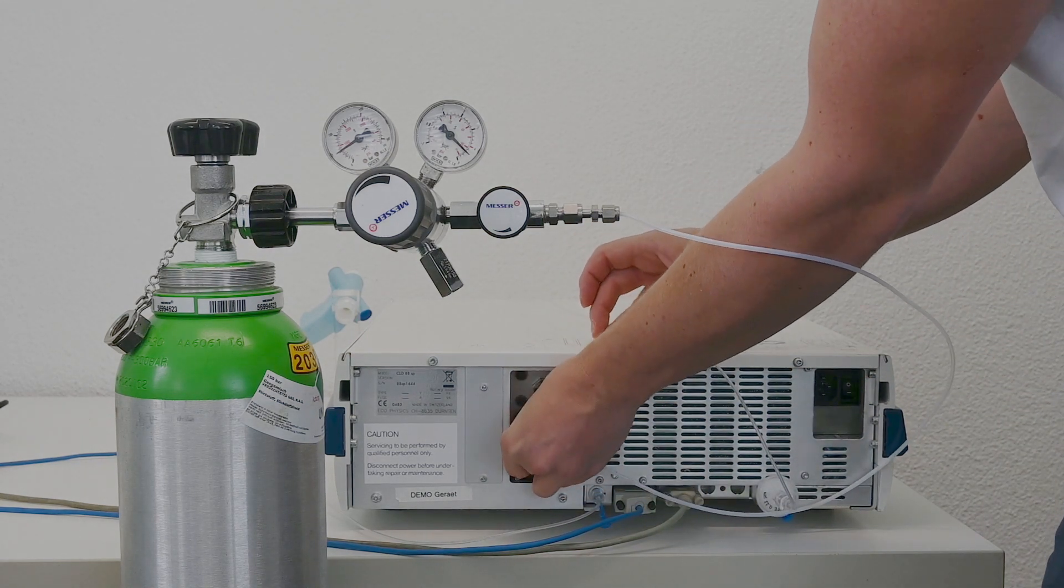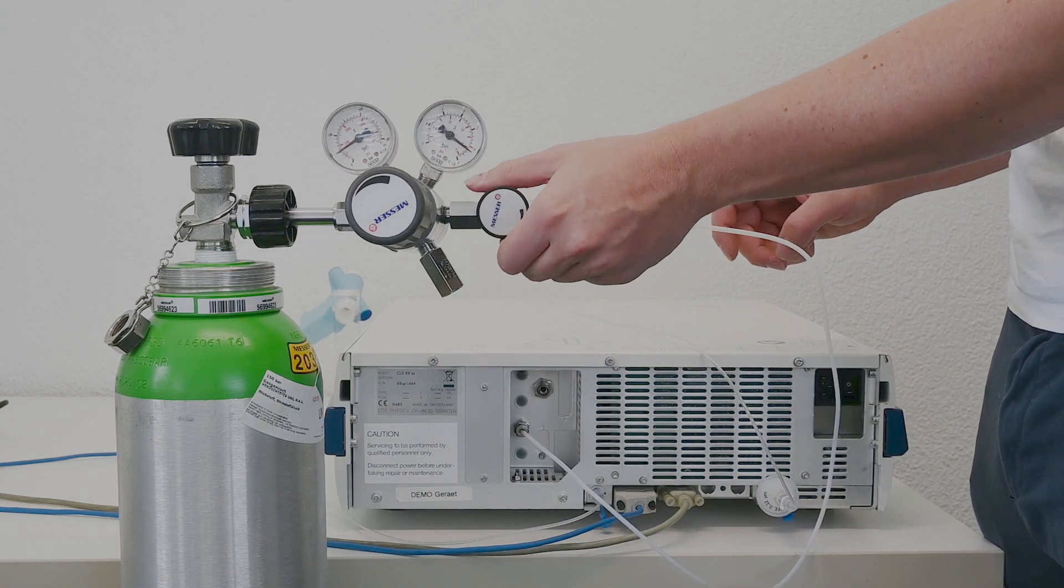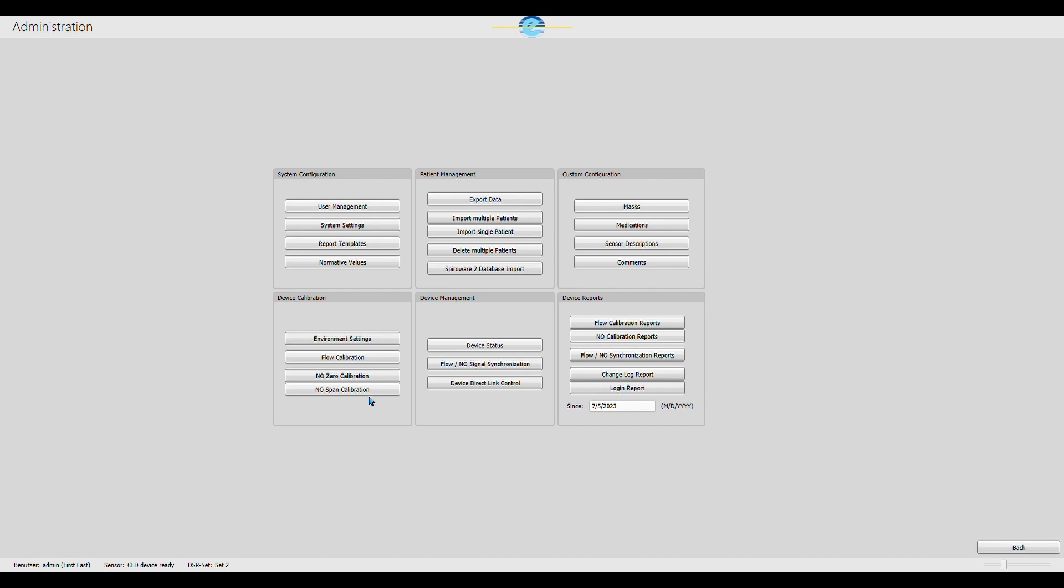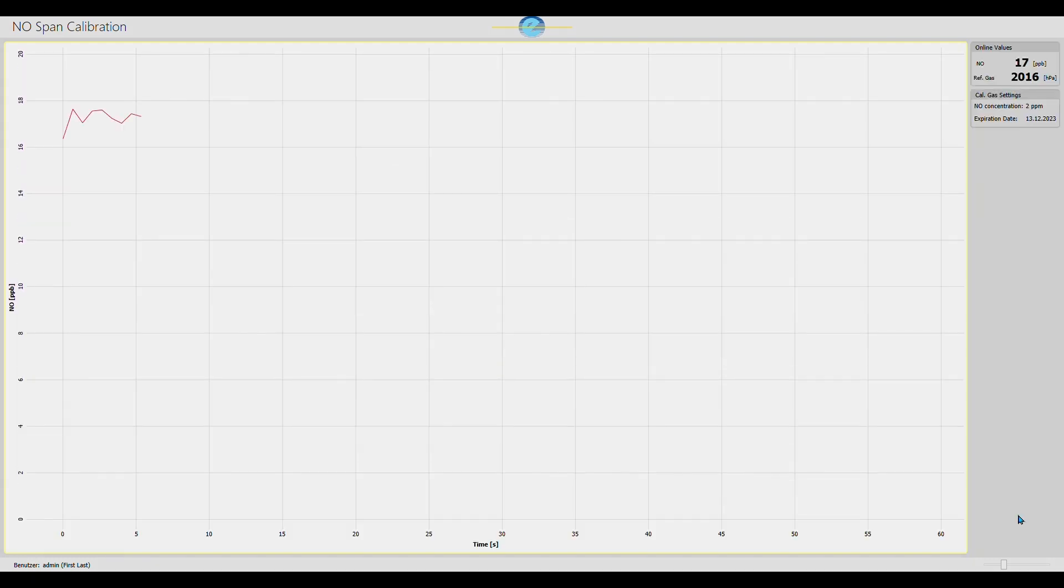Connect the gas cylinder to the CLD88 and set the inlet pressure to 3 to 8 bar. Enter the NO concentration and expiration date as specified on the gas bottle. Then, click on Confirm to start the NO span calibration.